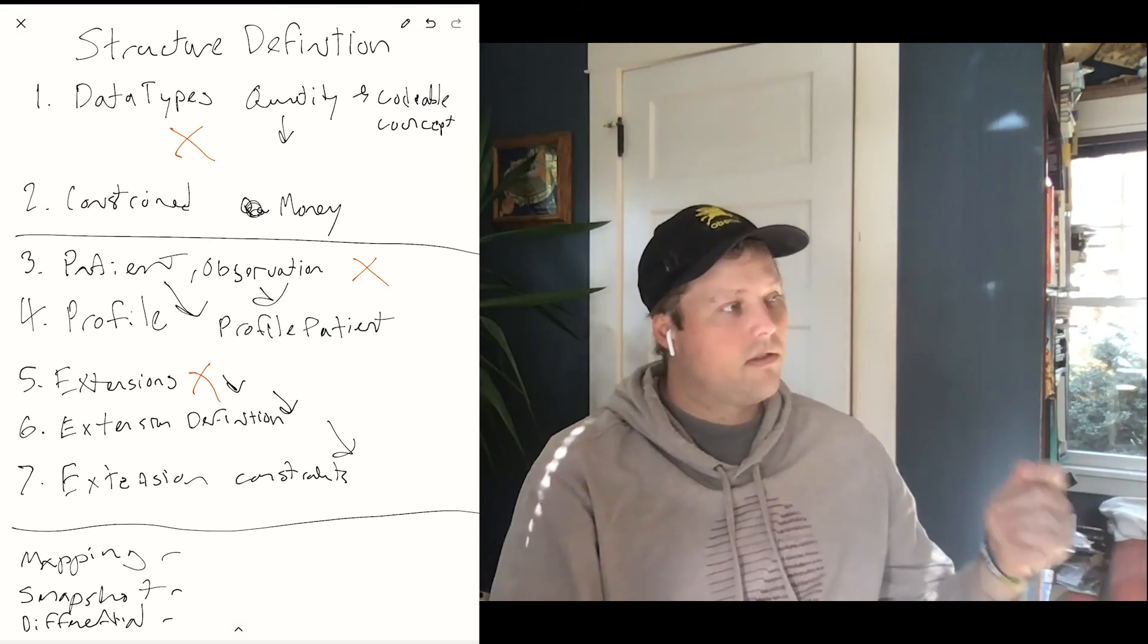Next, snapshot and differential serve the same purpose, but they're sort of two different ways of implementing a profile, or say a base resource definition and structure definition. Snapshot is sort of a whole picture of all the fields within a resource or a data type or an extension like we've talked about. And differential is saying, okay, take the base, and here's the delta. So it's essentially like you're just defining the diff on top of the existing resource.